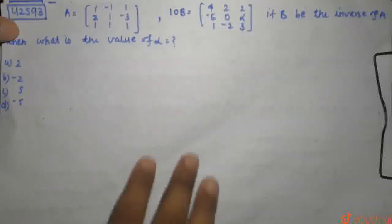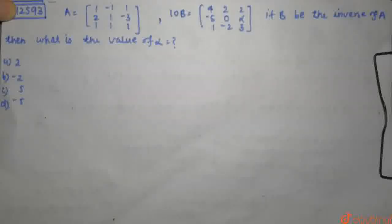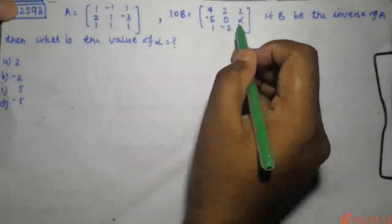A and 10B are given as matrices, and if B is the inverse of A, then we have to find the value of alpha. Alpha is unknown here.